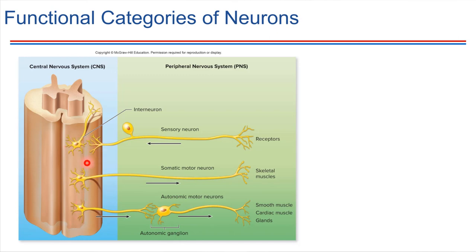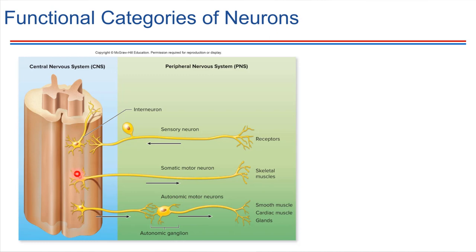Then there are neurons that can leave the central nervous system — they might have a section in the CNS, but most of the cell is out in the peripheral nervous system. These are the types of neurons that allow us to sense things about our surroundings, and this type is called a sensory neuron. It would have receptors at one end and carry signals toward the central nervous system. Below that is a schematic of a somatic motor neuron, with a very long axon that leads to a muscle — that's how skeletal muscles can be signaled.